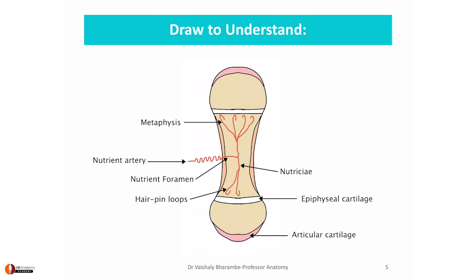You will find such loops in both the epiphysis at the upper end as well as the lower end. The artery also gives rise to branches that enter into the compact bone, supplying the inner two-thirds of the bone along with bone marrow. This is the first artery.